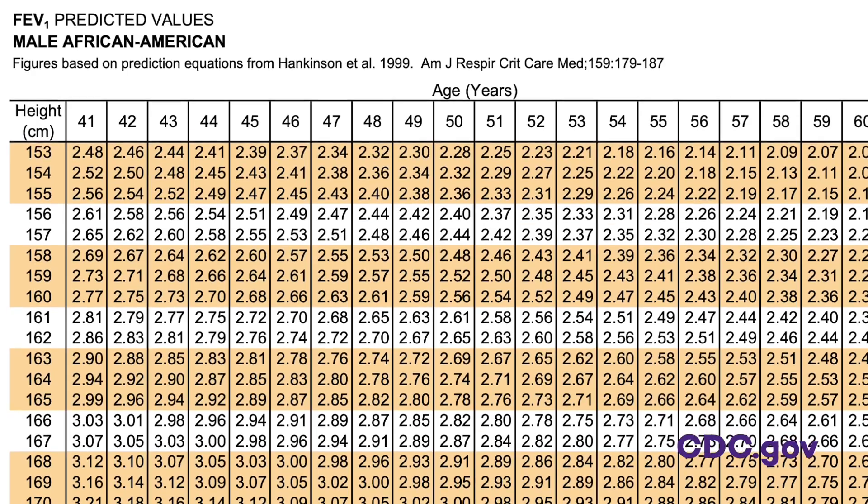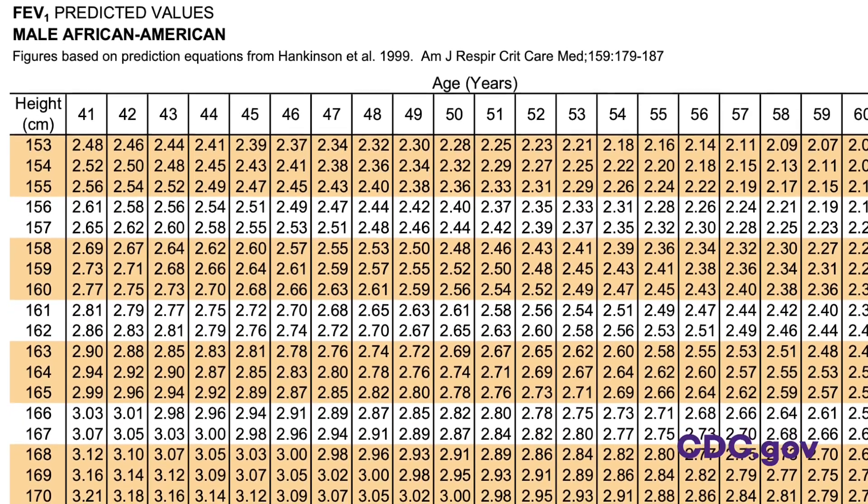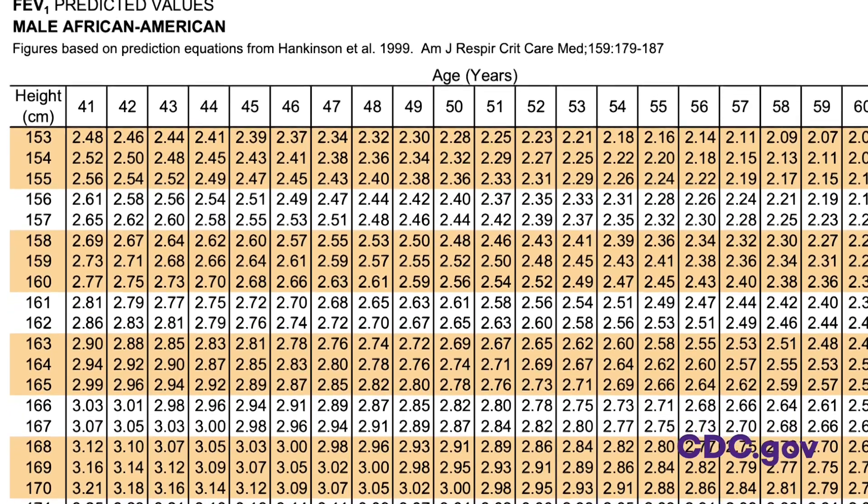The way that we currently interpret spirometry is through the use of race-specific reference values, and that means that a person's lung function is judged against the healthy population of a person of the same age, height, sex, and also their race.